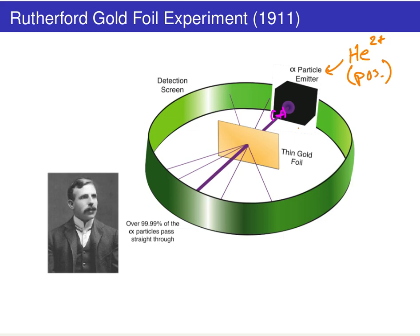He then shot those alpha particles directly at that thin piece of gold foil. The most remarkable finding right off the bat was that even though you're shooting these particles at a piece of gold foil, over 99.99% of those alpha particles actually passed straight through as if the gold foil wasn't even present.